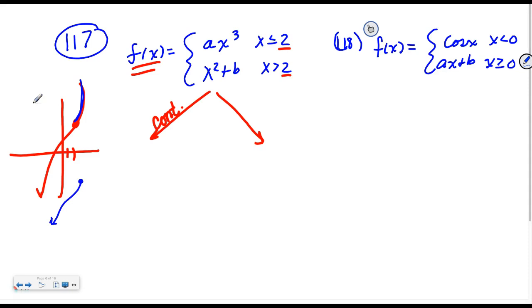So I can't have a break in continuity, like have the cubic end there and then the parabola go like this. I also can't have the cubic end here and then the parabola come down and go like this, because I'll have a cusp.